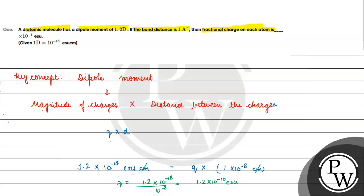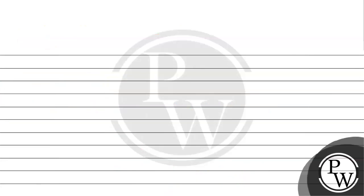Now we have q = 1.2 × 10⁻¹⁰ esu. Writing this in the required form, we get 1.2 × 10⁻⁹ × 10⁻¹ esu, which is a very small value.